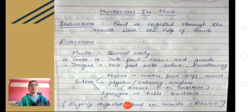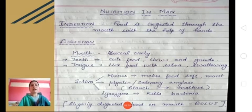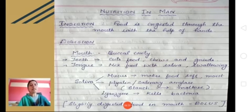The first component of saliva is mucus, the second is an enzyme called ptyalin or salivary amylase, and the third is an enzyme called lysozyme. Mucus moistens the food, makes it soft and slippery. The enzyme salivary amylase or ptyalin is very important because the digestion of carbohydrates begins inside the mouth — it converts starch into the simple sugar maltose. Lysozyme kills any harmful bacteria that may be present in the food.